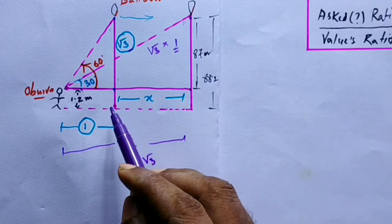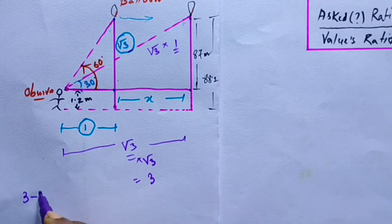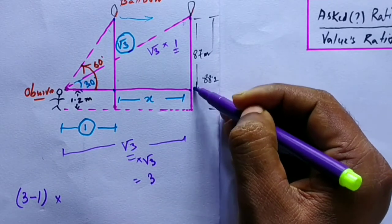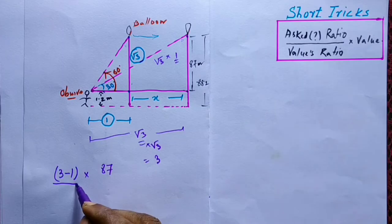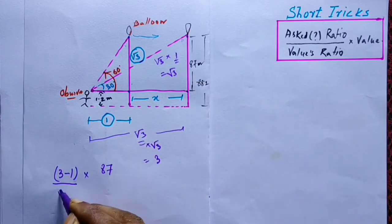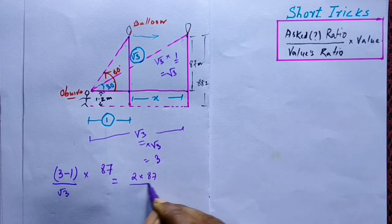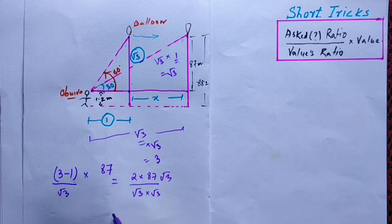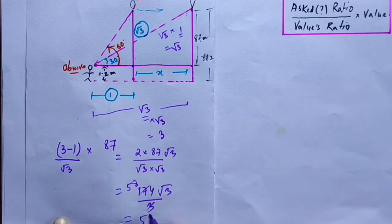The ax ratio is (3 − 1) = 2. The value is 88.2 − 1.2 = 87. Values ratio is √3. So x = 2 × 87 ÷ √3 = 174 ÷ √3 = 174√3 ÷ 3 = 58√3 meters is our answer.